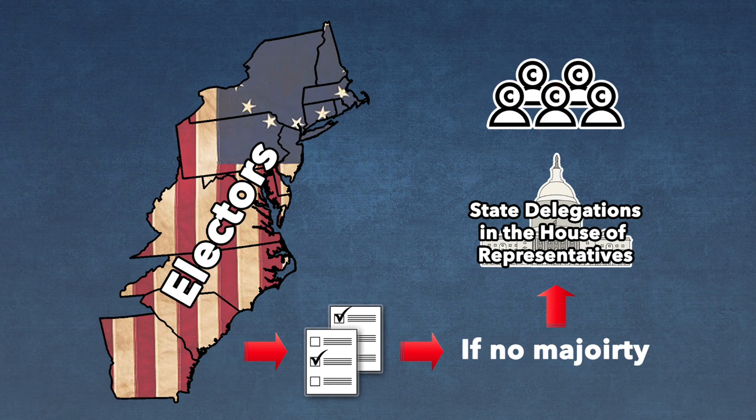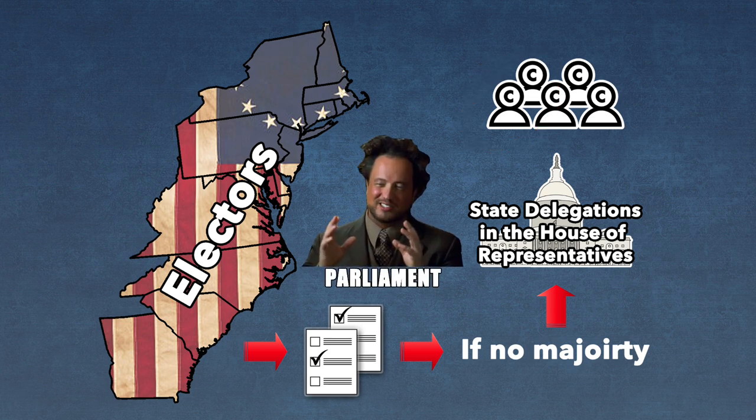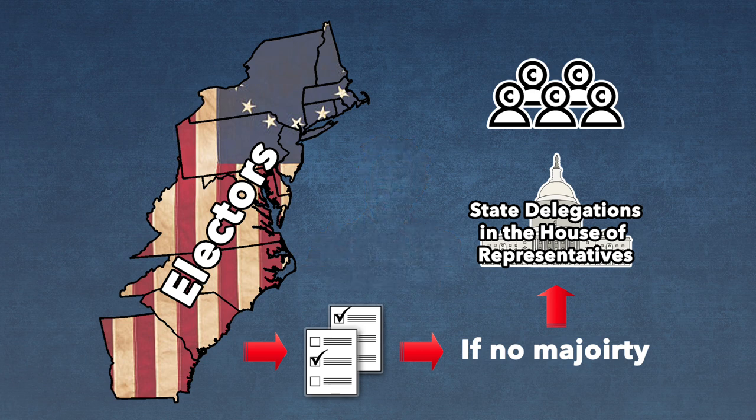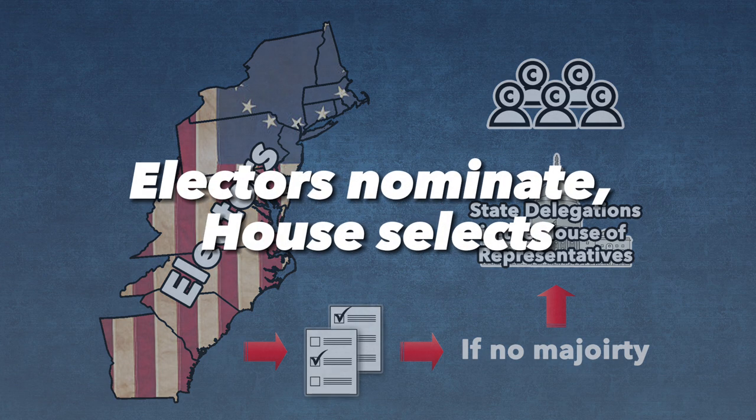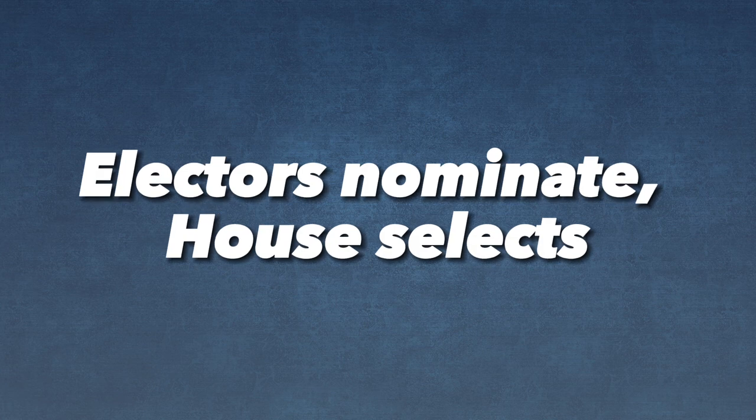So in effect, the original design the framers created was a parliamentary system. The slight difference being, the legislature would select the president but was limited to the five candidates nominated to them by the electors of the several states. Simply put, the electors nominate and the House selects.